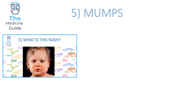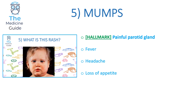Rash 5 is an example of mumps. The hallmark feature of mumps is painful parotid glands. Other features include fever, headache and loss of appetite. The key thing to remember is painful parotid glands — that phrase in the SBA should immediately make you pick mumps and move on to the next question, as you haven't got time to waste.